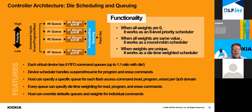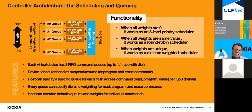If you set all weights to zero, this works as an eight-level priority scheduler with input queue zero being the highest priority and input queue seven being the lowest. When all weights are the same, it works as a round-robin scheduler. When all weights are unique, it works as a die time weighted fair queuing scheduler.